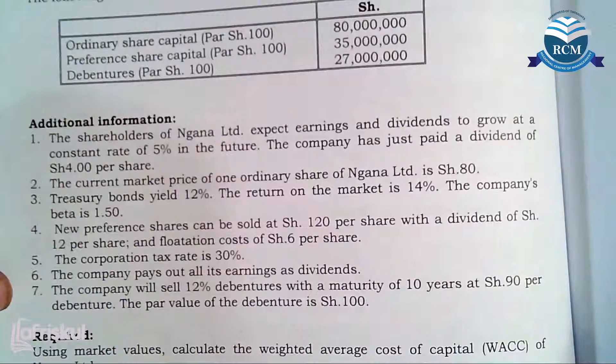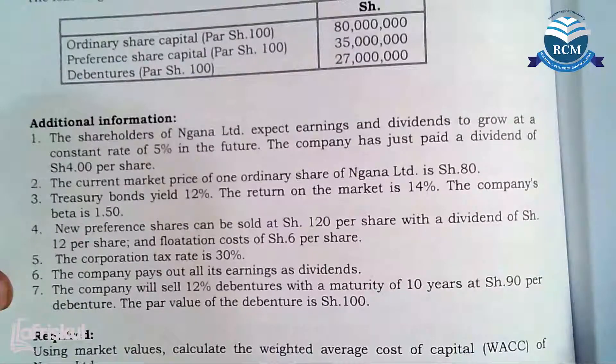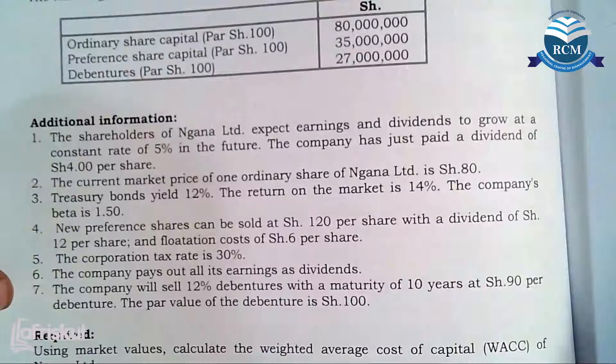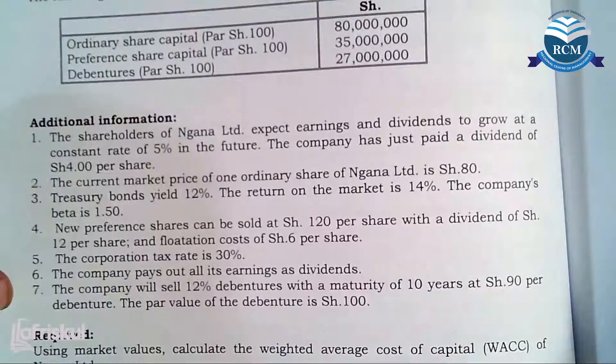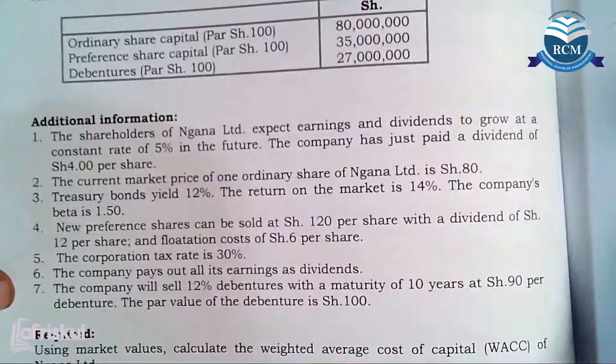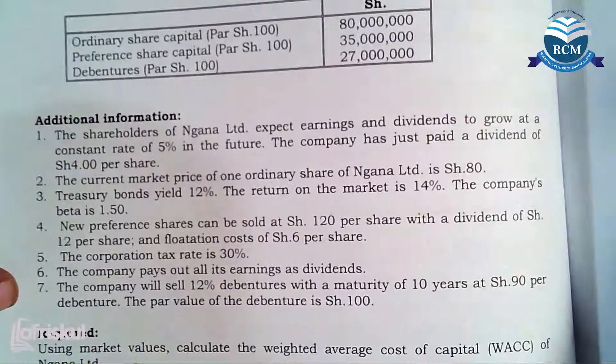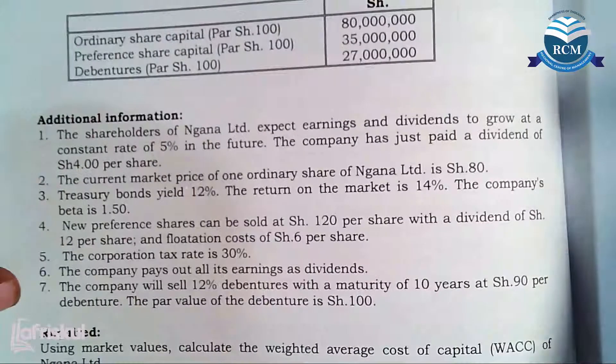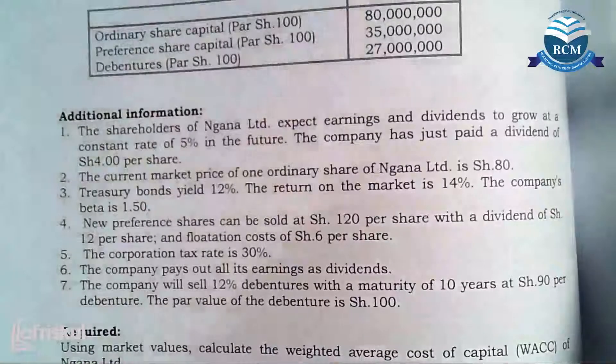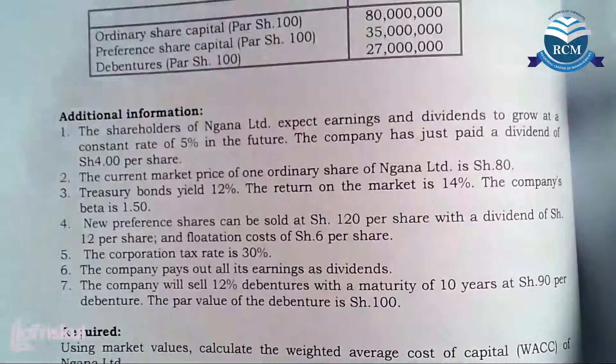The par value of the debenture is 100. So how are we going to get this cost of debt, debt whose maturity period has been specified in the question? That is a redeemable debt.